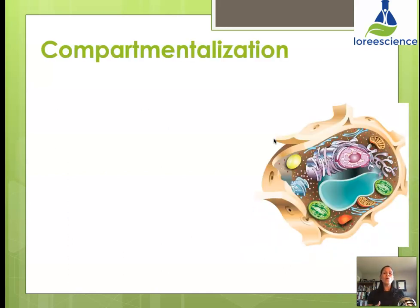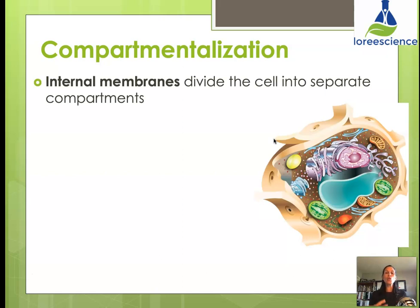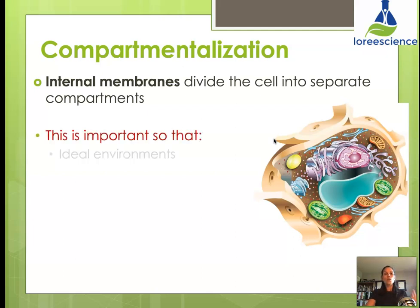Why are there all these organelles in cells? The reason is compartmentalization — internal membranes divide the cell into separate areas or compartments. This allows cells to be capable of doing more. Think of your house: by having walls and doors you create different compartments ideal for different activities. The environment ideal for your bedroom is not ideal for a kitchen or bathroom, so you put up walls. Cells use membranes as their walls to divide off different sections.